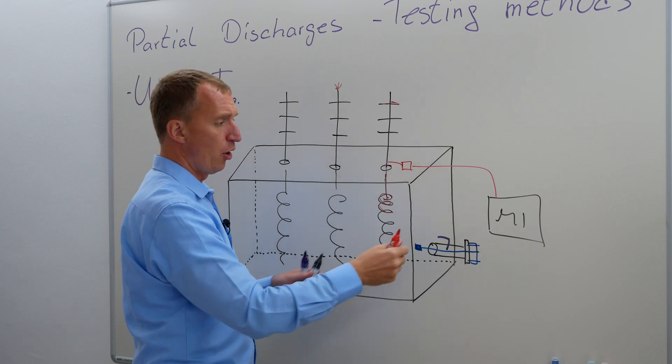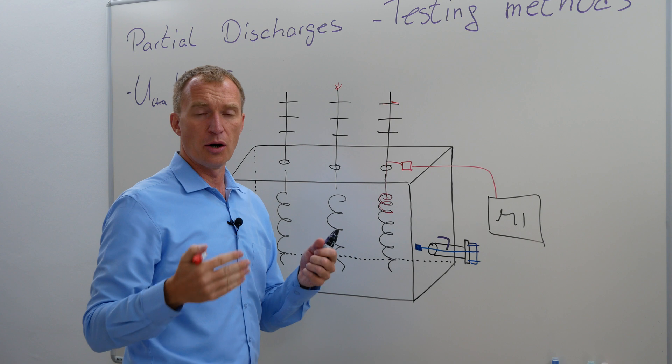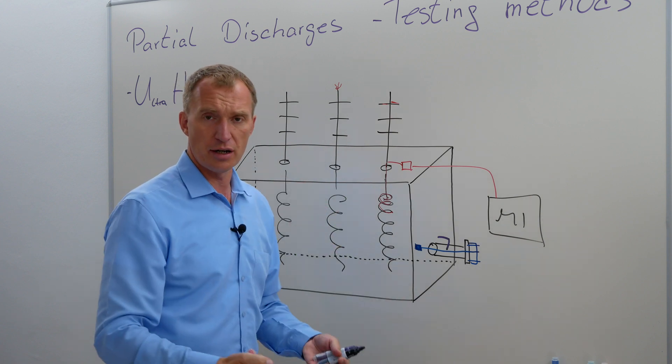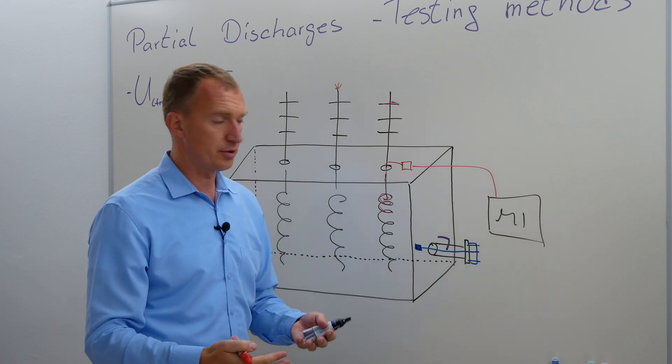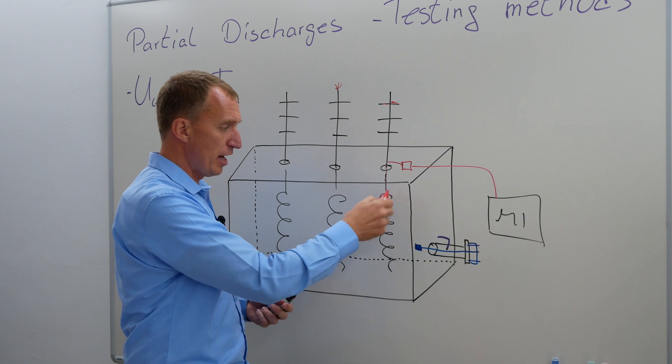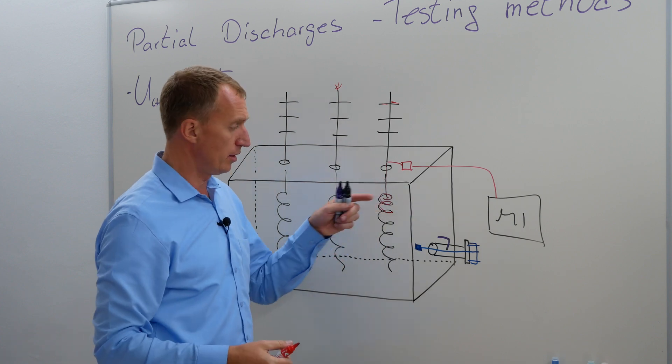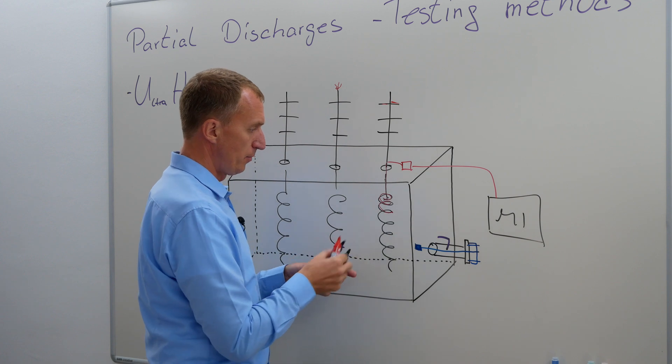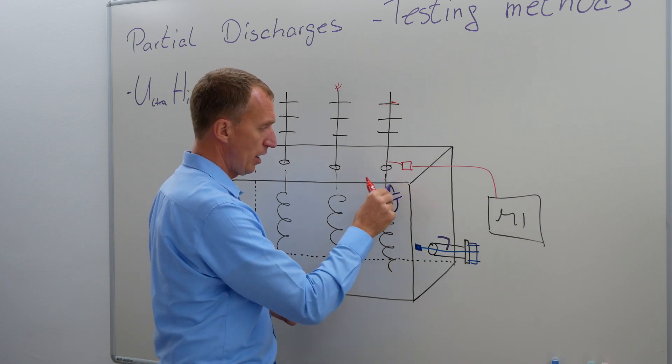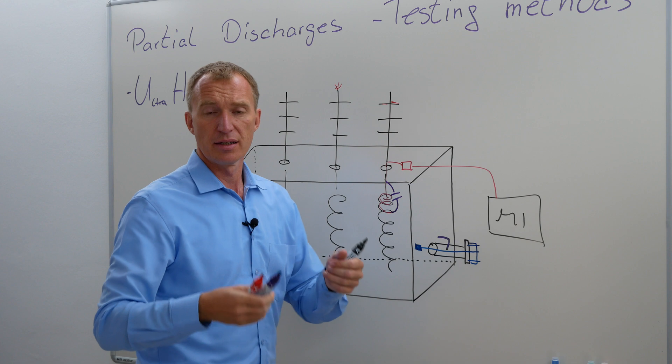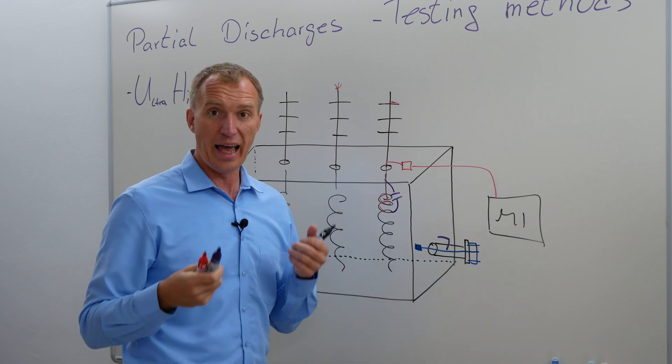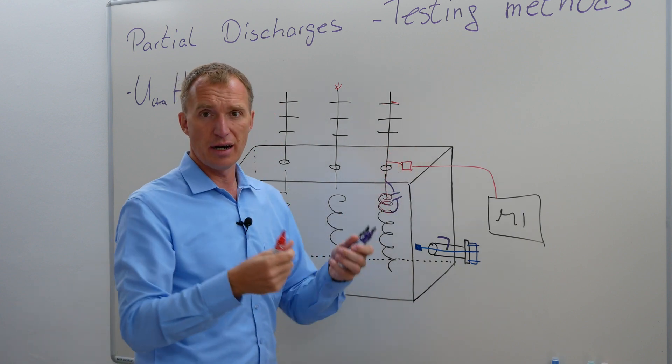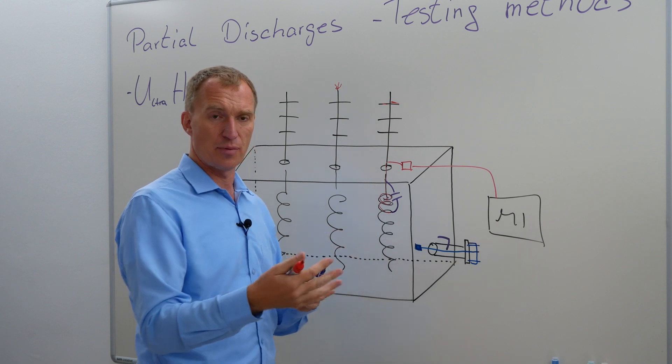By the time it already arrived at my sensor, I already lost some of the charge, and I lost a lot of the frequency content. It has to travel through the winding. Another possibility, there could be technically a capacitive coupling to here, but the signal is already altered. Once it is here, I have to figure out, is it from inside or from outside the transformer.